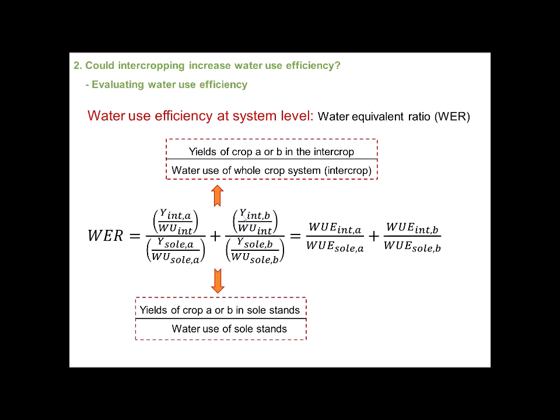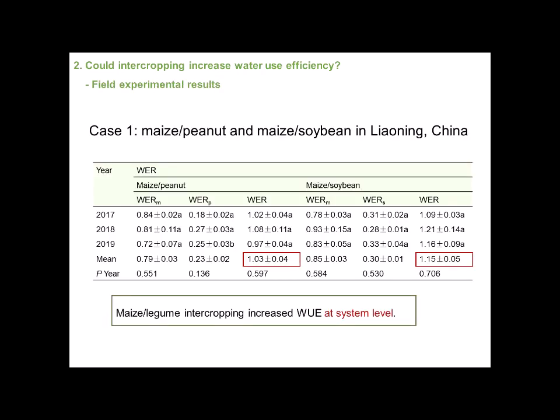In this formula, y_int_A and y_int_B mean yields of crop A or B in the intercropping; W_int means the water use of the whole intercropping system; y_sole_A and y_sole_B mean yields of crop A or B in sole crops; and W_sole_A and W_sole_B mean the water use of sole crops of A and B. From the field experimental results, the maize-legume intercropping system increased water use efficiency at system level.